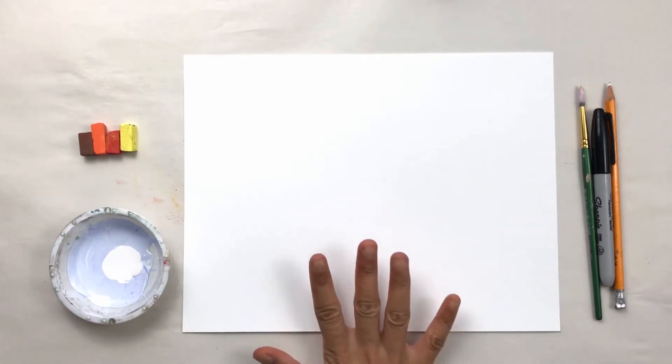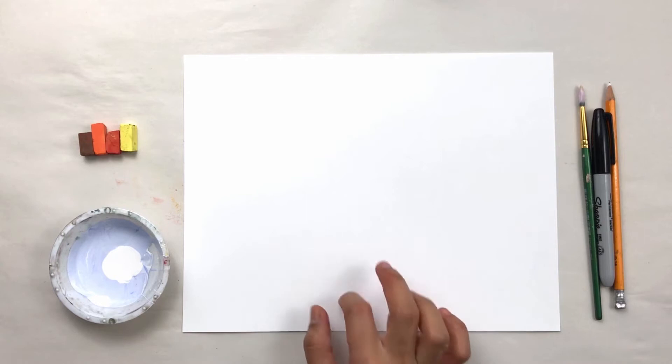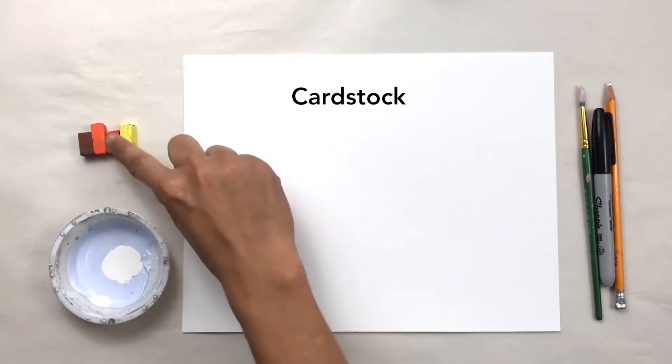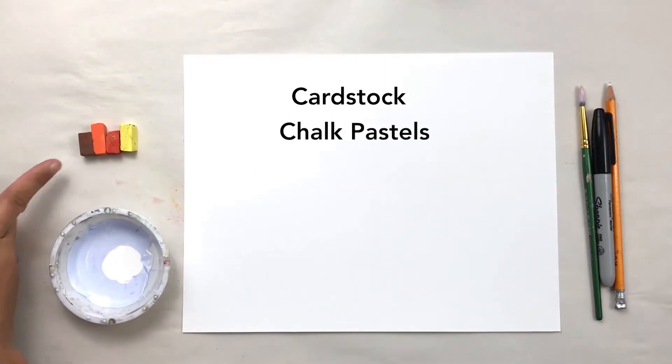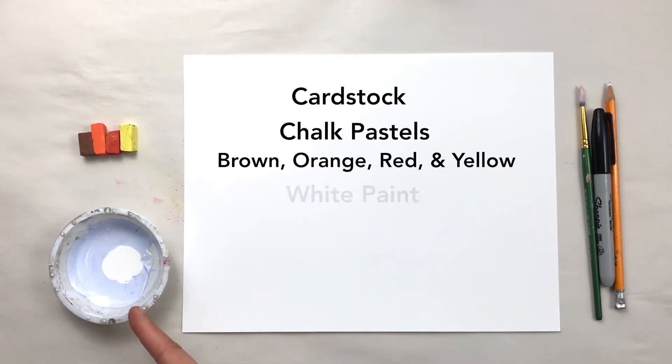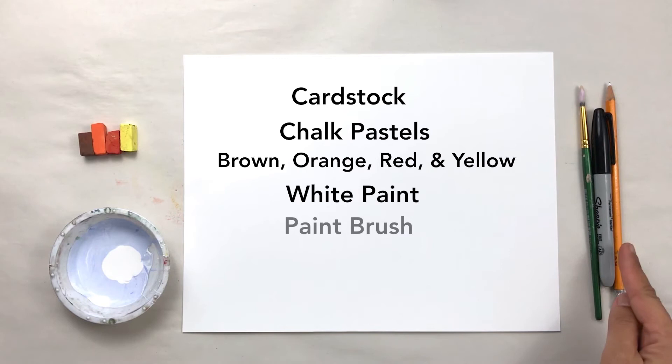So let's go ahead and go over some of your supplies. You will need a piece of paper. I am actually using cardstock as always, one of my go-to papers. I am using chalk pastel, so I have brown, orange, red, and yellow warm tones. I'm also having a little bit of white paint, paintbrush, sharpie, and a pencil.